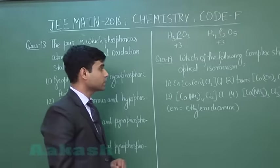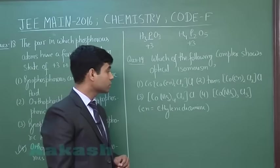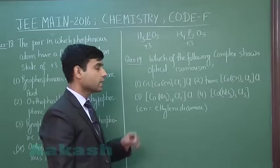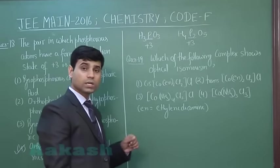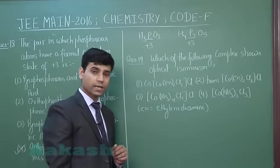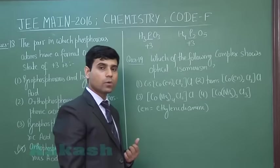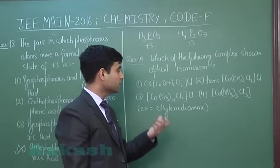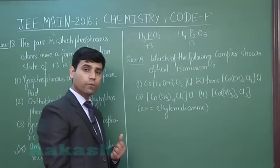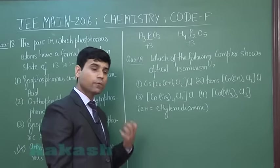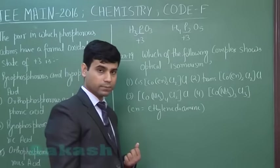The next question asks which of the following complexes shows optical isomerism. The options are: (1) cis-[en]₂Cl₂·Cl, (2) trans-[en]₂Cl₂·Cl, (3) [Co(NS₃)₄]Cl₂·Cl, and (4) [Co(NS₃)₃]Cl₃.